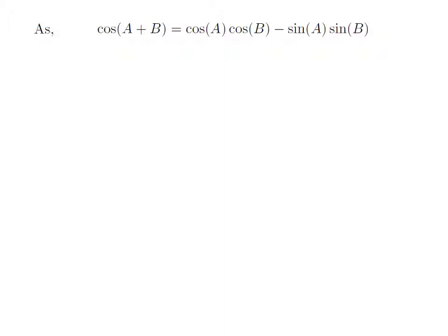As we know, the trigonometry identity cosine of A plus B is equal to cosine of A into cosine of B minus sine of A into sine of B.